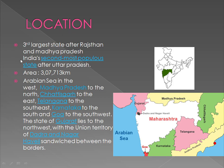Location. Maharashtra is the first largest state after Rajasthan in terms of area, and the second most populous state after Uttar Pradesh. It has a total area of 37,713 square kilometers.